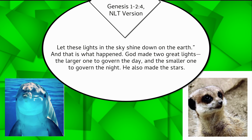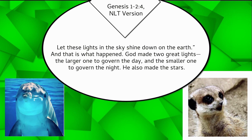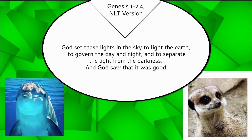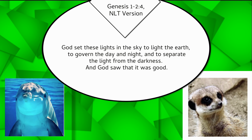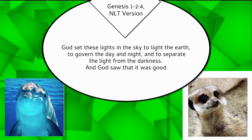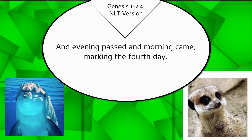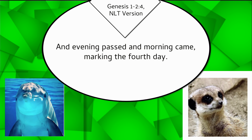God made two great lights, the larger one to govern the day, and the smaller one to govern the night. He also made the stars. God set these lights in the sky to light the earth, to govern the day and night, and to separate the light from the darkness. And God saw that it was good. And evening passed, and morning came, marking the fourth day.